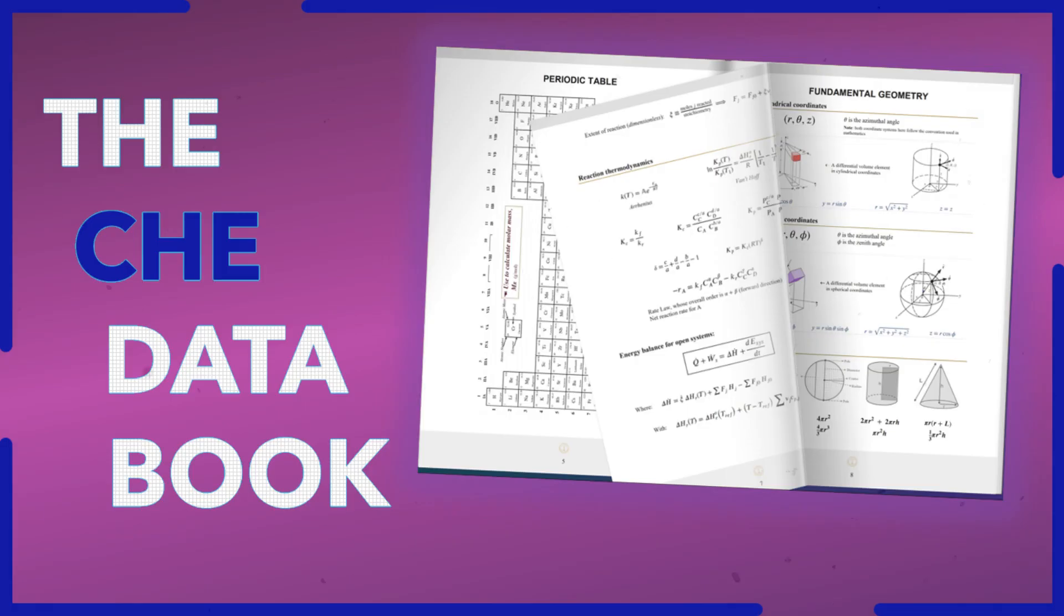And then it gets even wilder. We get into dimensionless groups. Dimensionless what now? So say you're trying to describe how water flows through a pipe. You could talk about its velocity, the diameter of the pipe, viscosity. My head's spinning already. Right, that's a lot of different things, all different units. Dimensionless groups bring it all together into one number. One number to rule them all? Kinda. Like the Reynolds number tells you if the flow is smooth or turbulent.